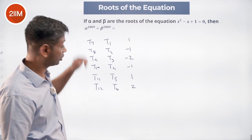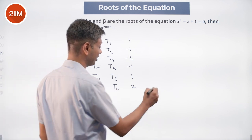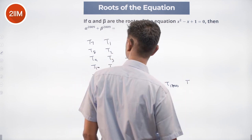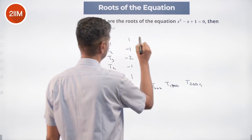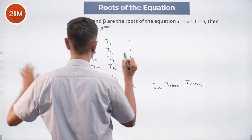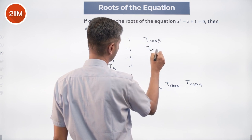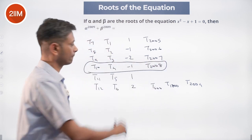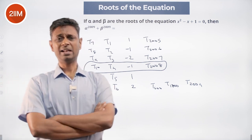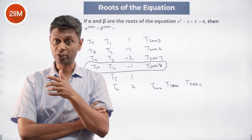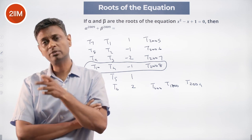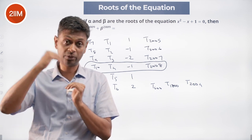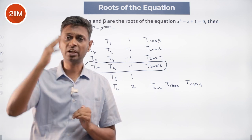We want T2009. The closest multiple of 6 less than 2009 is 2004, so T2004 falls at position 6 in the cycle (value = 2). Then T2005 = 1 (position 1), T2006 = -1 (position 2), T2007 = -2 (position 3), T2008 = -1 (position 4), T2009 = 1 (position 5).